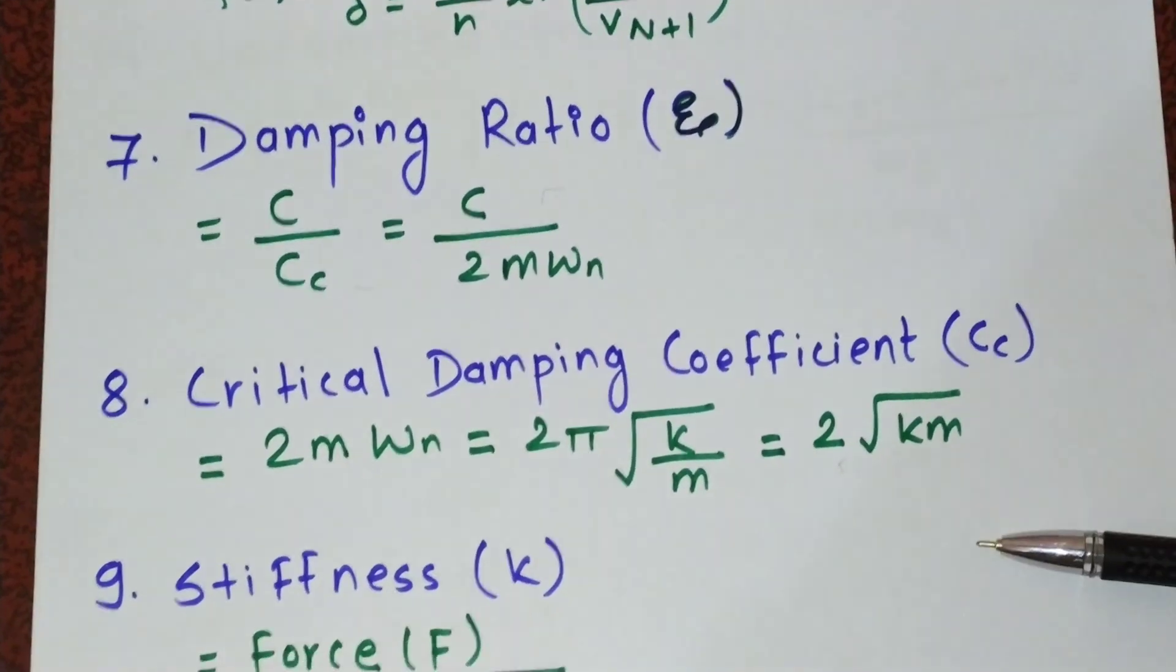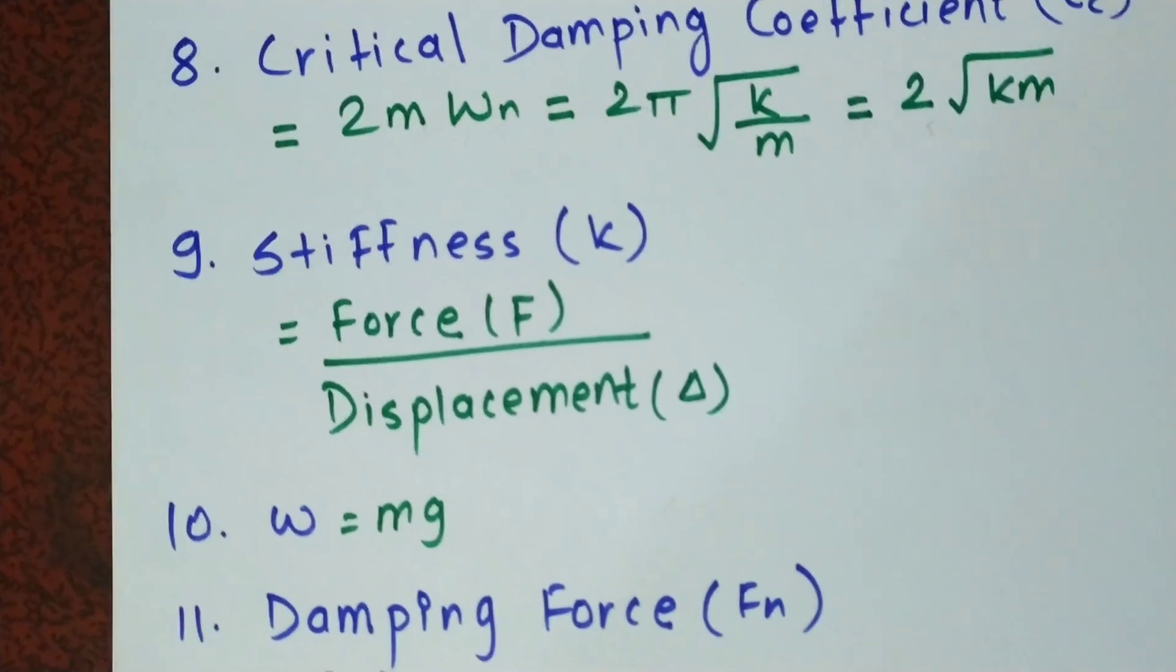Stiffness k equals force by displacement. Weight equals mass into acceleration due to gravity g. Damping force FD equals cv, where c is the damping coefficient and v is the velocity.